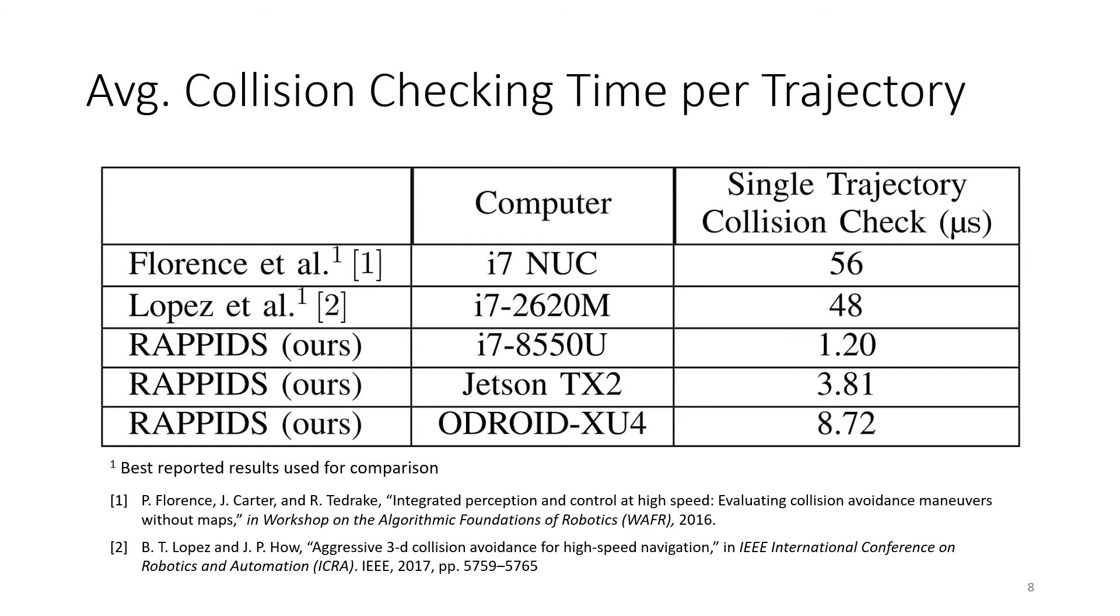So just to reiterate, the main idea here is that if we can check our candidate trajectories for collisions much quicker than we could before, then we can generate more candidate trajectories using our sampling-based planner and check more of them for collisions, meaning that we're more likely to find a better trajectory to track from that given depth image.